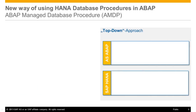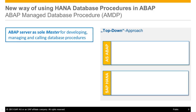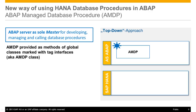A solution for this cumbersome approach is provided by means of the ABAP Managed Database Procedure, short AMDP — a class-based framework for managing and calling database procedures in ABAP. This so-called top-down approach enables developers to create and manage the whole lifecycle of HANA procedures in an ABAP development environment. The AMDP is implemented as a method of a global class which is marked with specific interfaces, a so-called AMDP class.